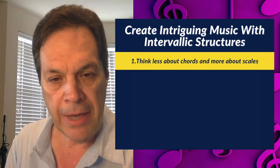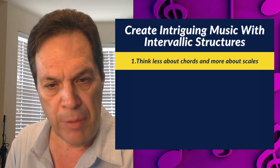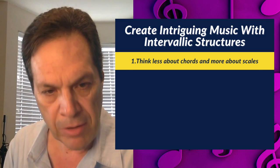This idea of taking intervallic structures comes from scales. Chords come from scales. If we take the C major scale, we have seven diatonic chords: C major 7, D minor 7, E minor 7, F major 7, G dominant 7, A minor 7, and B minor 7 flat 5, also known as half diminished. When we're accessing the scale, we basically have all that DNA that these chords come from. Think less about chords and more about scales.